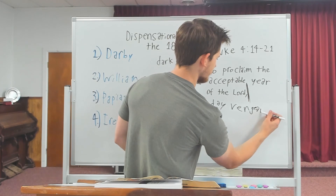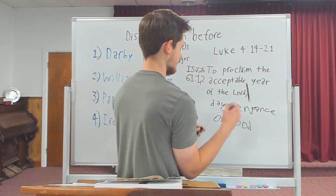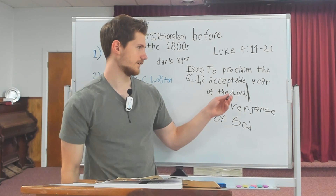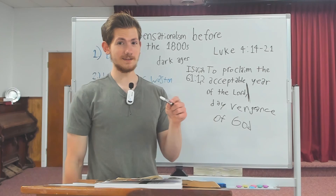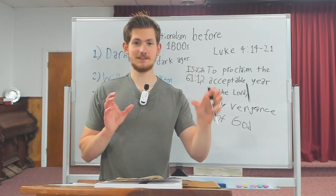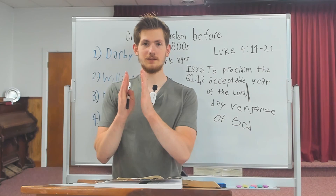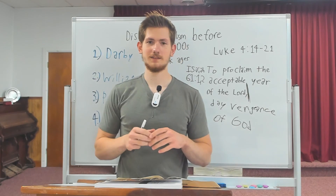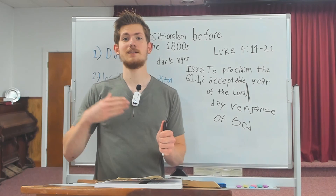Jesus stopped and did not read 'the day of vengeance of God' because he was dividing the verse to the right time period for the right group of people. So he divided the day of vengeance from what had already been fulfilled. One verse — you can divide one section to this time period and another section to a later time period. Jesus is a dispensationalist, dividing scripture across different time periods.